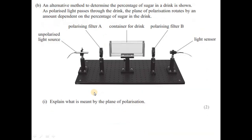An alternative method uses polarized light. As polarized light passes through the drink, the plane of polarization rotates by an amount that depends on the percentage of sugar. The apparatus includes a container, polarizing filter B, a light sensor, polarizer A, and an unpolarized light source. Explain what is meant by the plane of polarization.